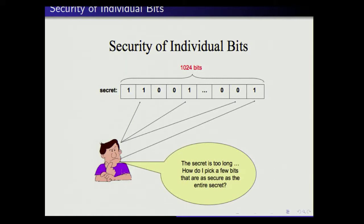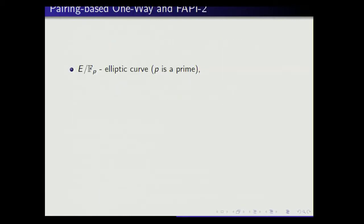First, to introduce the problem: very often whenever we have a secret — a long secret — we are interested to know whether parts of this secret are secure, so that we can use only certain bits of the secret. In particular, one question is whether we can use individual bits, and whether it is hard to compute those bits. The main one-way function I want to focus on is a hardness assumption known as the fixed argument pairing inversion problem, or FAPI, and it's the underlying assumption of various protocols.